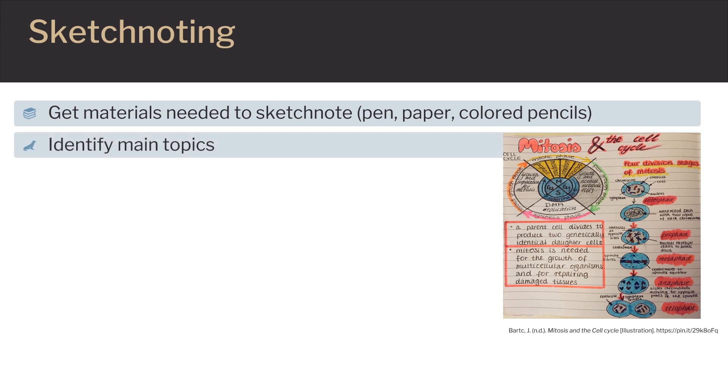At the top of the page, write the main idea the sketchnote will be about. For example, if you are creating a sketchnote about cells that split, you would write cell division at the top of your notes.